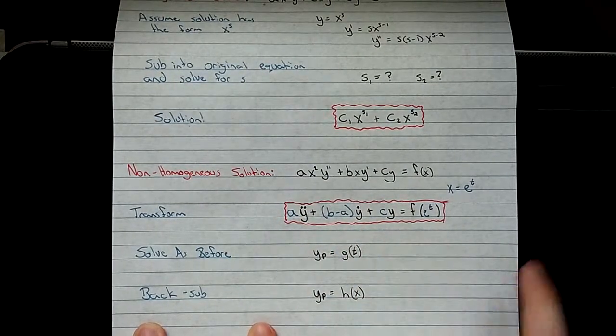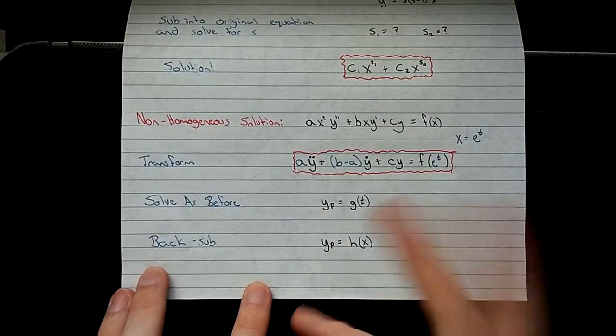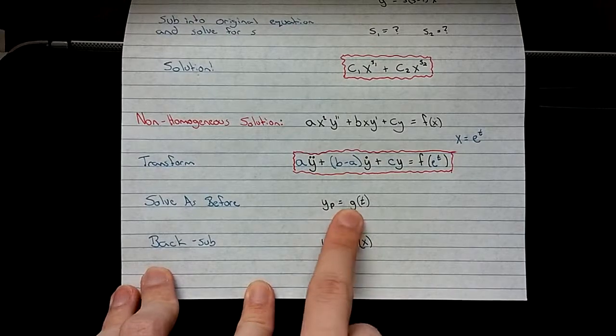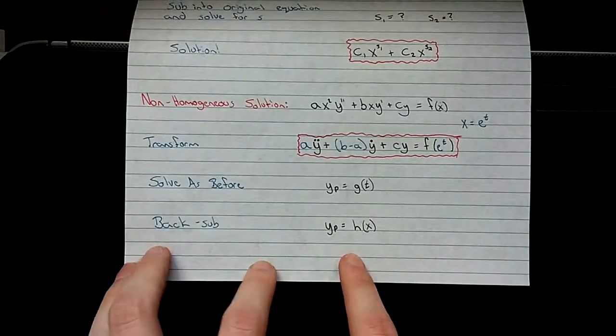The reason you can do that is, again, because it works. Just accept it. So you solve it as before. You'll get your particular solution. That's just some function. And then you're going to back substitute.